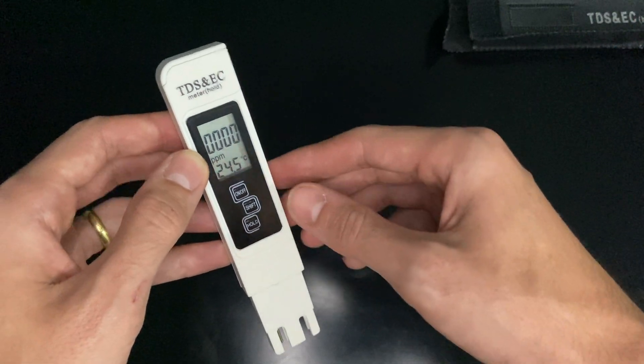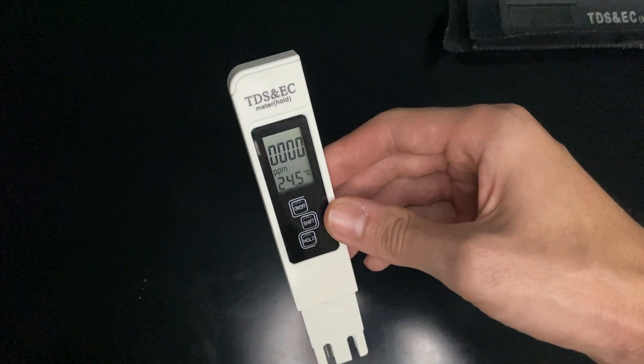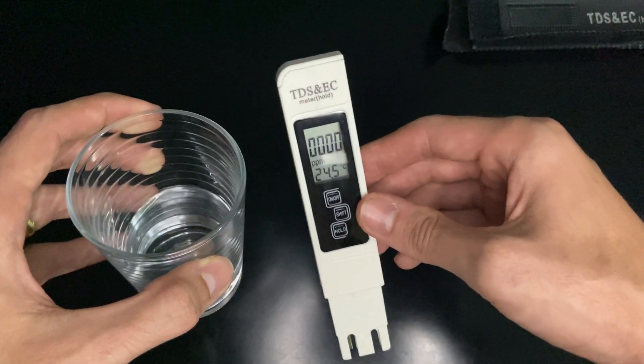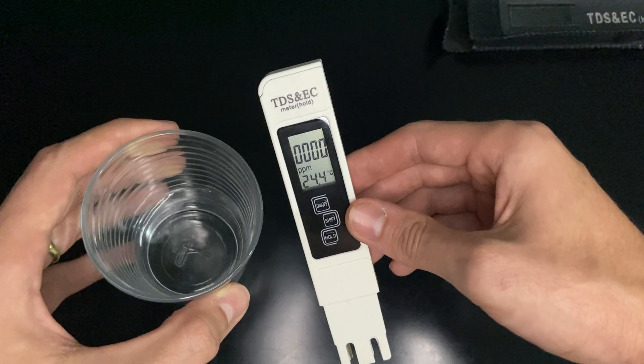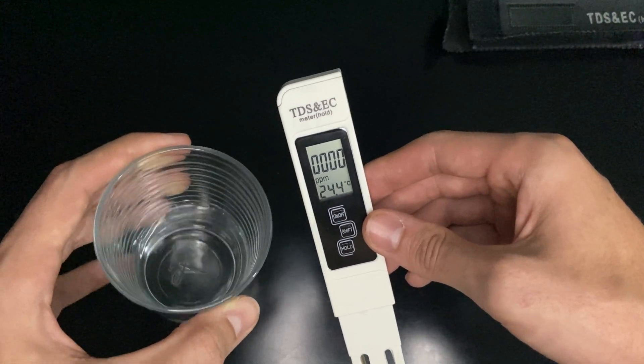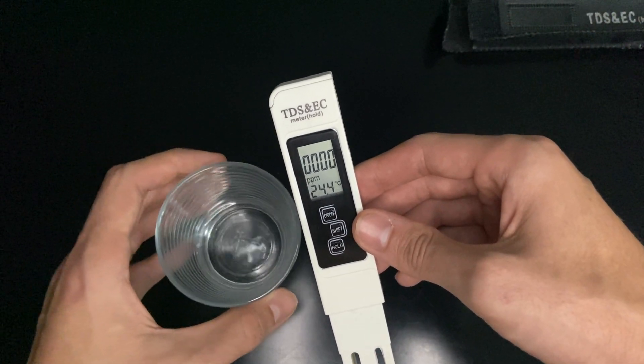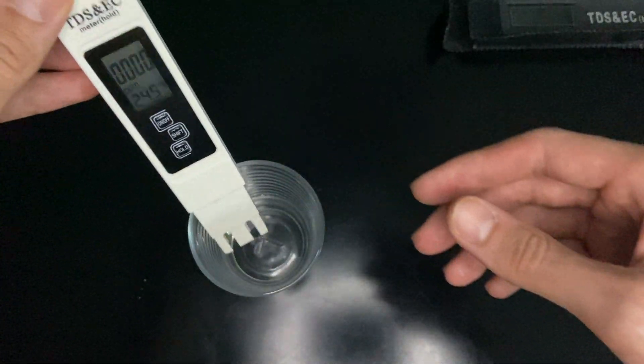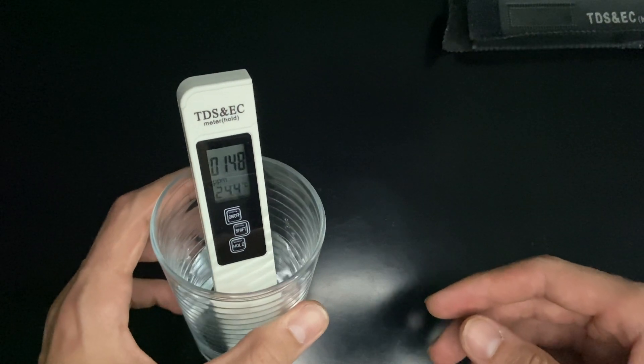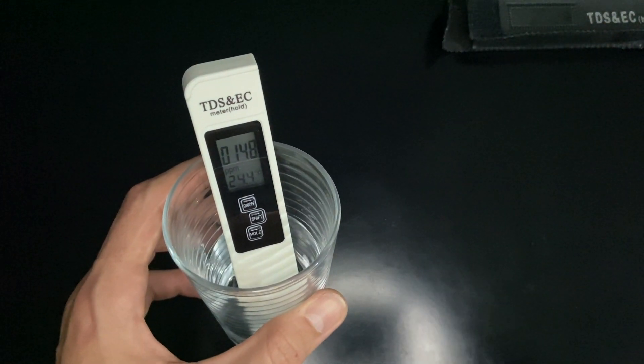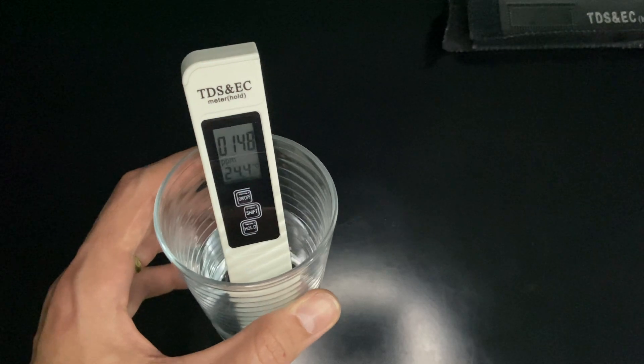Let's try this. Here's a sample from my water filtration system. Let me put it here, and as you can see, the number is 148. We have a scale here that shows the quality of the water.